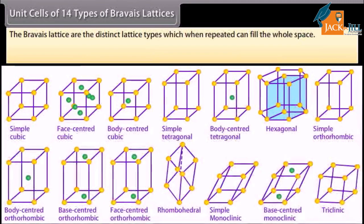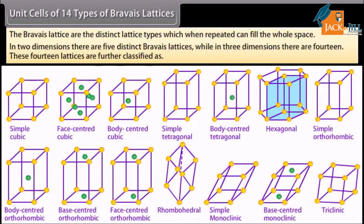The Bravais lattices are the distinct lattice types which, when repeated, can fill the whole space. In two dimensions there are five distinct Bravais lattices, while in three dimensions there are 14. These 14 lattices are further classified.